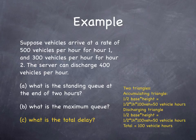And the discharging triangle, hour two, one half base times height again, one half times one hour times 100 vehicles, also equals 50 vehicle hours, so the total is 100 vehicle hours.